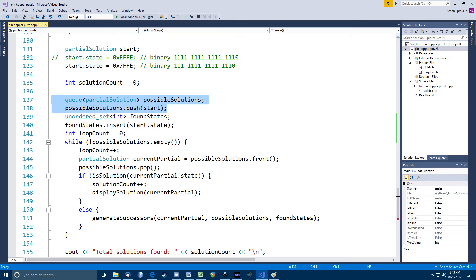After that, I set up the initial state and partial solution and put that in the possible solutions queue. Then it's just a loop that pulls the front partial solution from the queue, checks to see if it's a solution, and if not, generates all the new partial solutions from that and sticks them at the end of the queue.